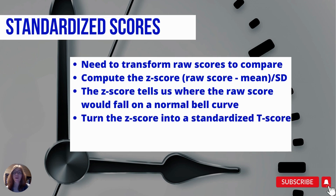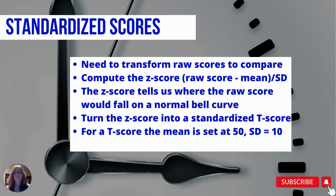And then if we want a standardized score, we have to turn that Z score into a standardized T score. It's standardized because the mean is set at 50 with a standard deviation of 10. This helps us compare a bunch of different types of tests that have all kinds of different scores and ranges. We can do that by calculating the T score with this formula: 50 plus 10 times the Z score.